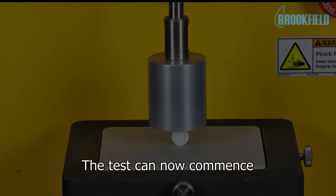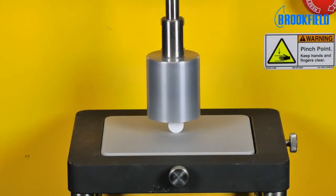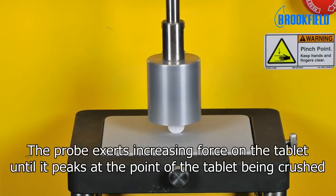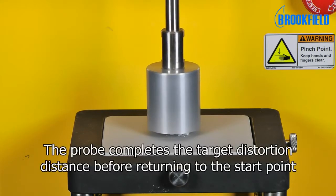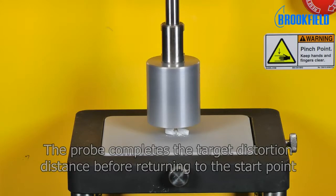The test is now ready to begin. At the tablet surface, the cylinder probe exerts an increasing force on the tablet to the point where the tablet begins to crush. The probe continues to crush the tablet, covering the target distance before withdrawing and returning to its starting position.